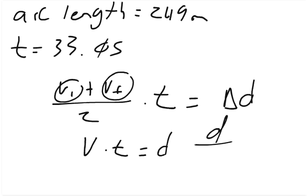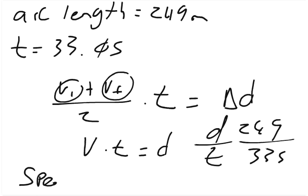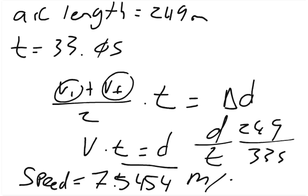So you would say V velocity times time equals distance. And so you divide distance divided by time. The distance was 249 meters. The time was 33 seconds. So the velocity, or not the velocity, but the speed. The speed equals 7.5454 meters per second.